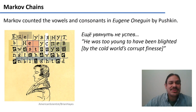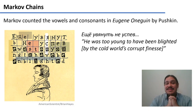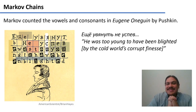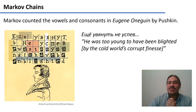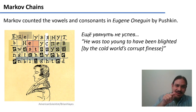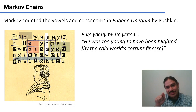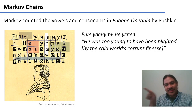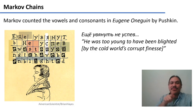Markov models were invented by a Russian mathematician called Andrei Markov, who took a novel by Alexander Pushkin called Eugene Onegin and then counted — counted the vowels, counted the consonants. For example, the first line: "Yosho Vyanuts ne uspief" — "He was too young to have been blighted by the cold world's corrupt finesse." In the first word you have the vowel E, then the consonant SH, then a vowel, then a space, then a vowel, then a consonant, and so forth. Markov counted every single one of these.